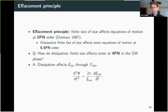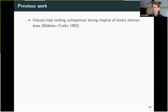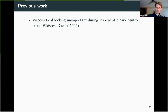Some previous work: Bilson and Cutler looked at what viscosity would be needed for the stars to spin up fast enough through tidal torquing to become tidally locked. If tidally locked, this is a 2PN effect. They found you would need unphysically large values of viscosity—the momentum transport timescale across the star would need to equal the speed of light—effectively ruling out that viscosity would be important through this tidal locking mechanism.